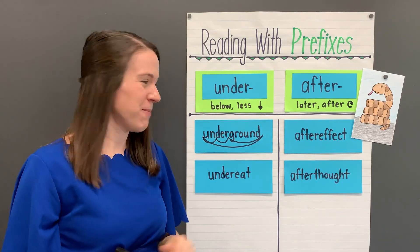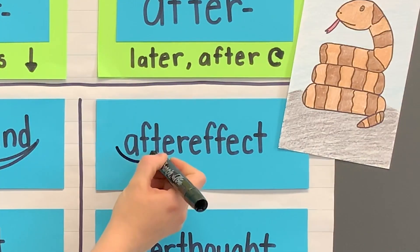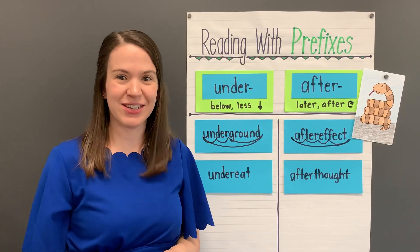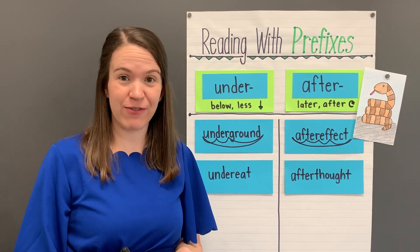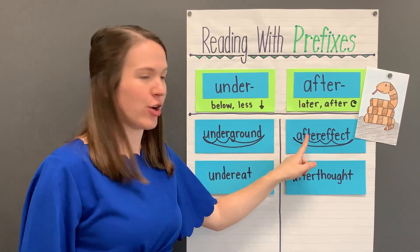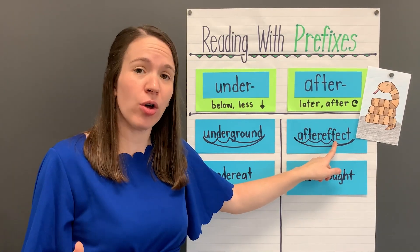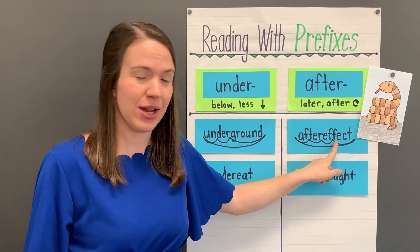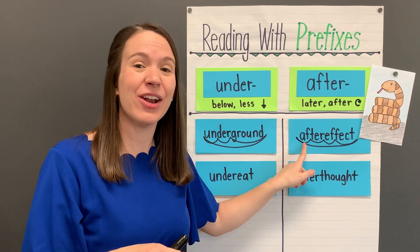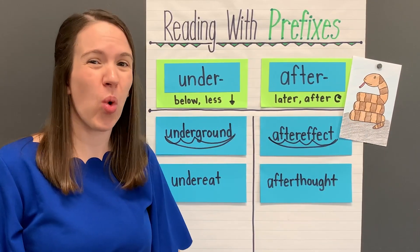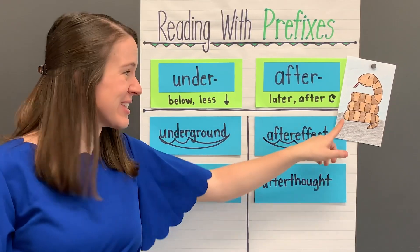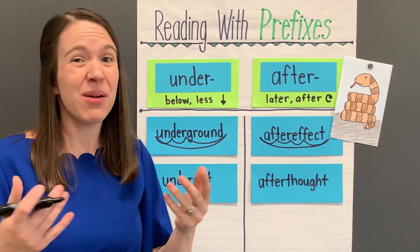Now let's try another word. Read this word with me. After effect. This word is aftereffect. By looking at the prefix after, we can understand this word. After means later or after. An effect is a result or consequence of an action. So an aftereffect is an effect or result that happens at a later time. Some people think the northern water snake is venomous and should be killed — it's not. One aftereffect of killing snakes is that larger animals that hunt them for food might go hungry.